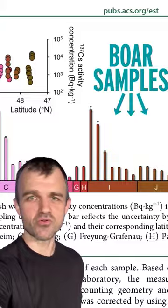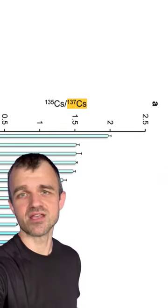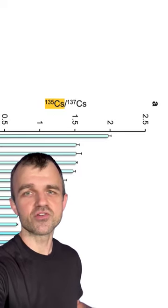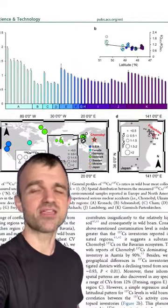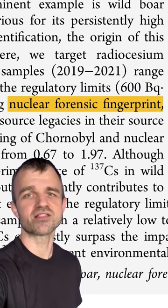To figure out what's going on, they took a bunch of wild boar samples and measured the ratio of cesium-137, which is a decay product of uranium-238, compared to cesium-135, which is a lot more stable. That gives you the nuclear forensic fingerprint, which tells you exactly where that fission product came from.